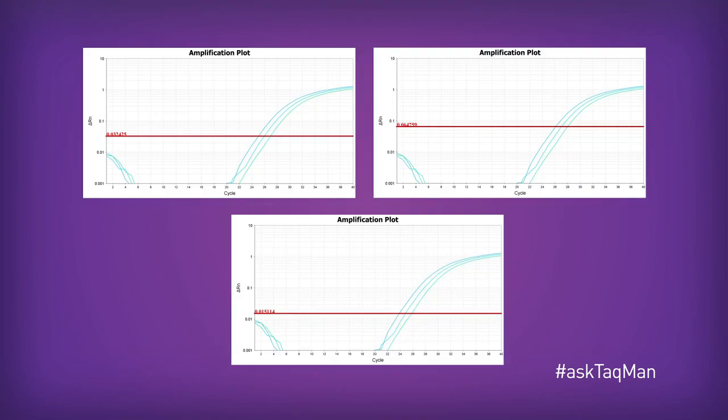The attentive viewer might be tempted to ask, well, if the threshold can be moved up or down, doesn't that change CTs? Why, yes it does. But here's the thing. As long as we keep the threshold firmly within the geometric phase, the relative or delta CT between any two samples stays constant. This fact allows us to do things like calculate fold changes in gene expression from sample to sample, and to get quantity information from a standard curve.